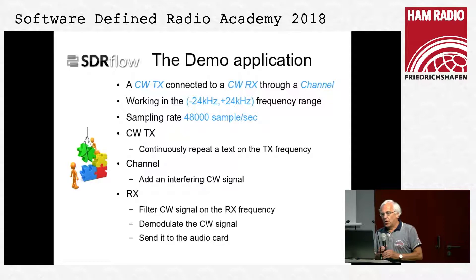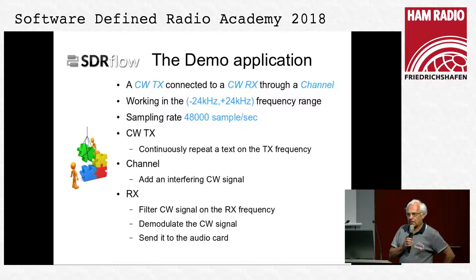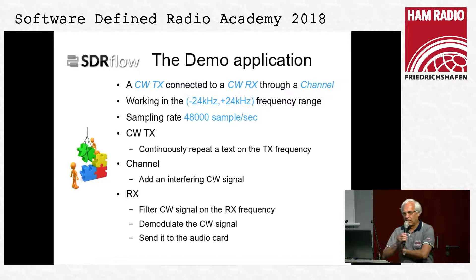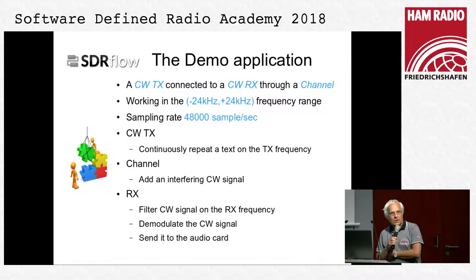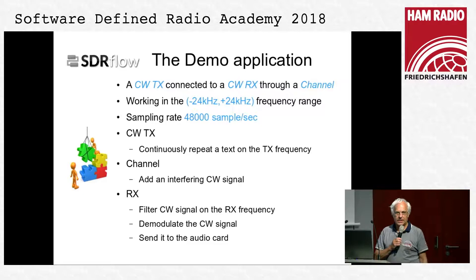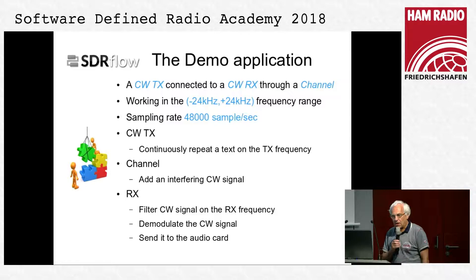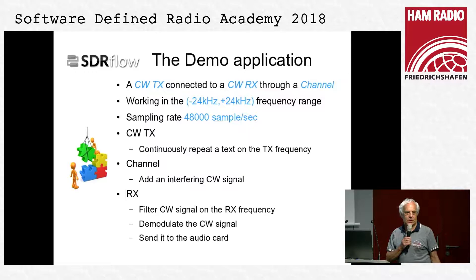Let's see the demo applications. It's very simple — it's a CW transmitter connected to a CW receiver through a channel. It works in the minus 24 to plus 24 kilohertz frequency range and uses a 48 kilohertz sample-per-second sample rate. The transmitter will repeatedly transmit a given text. The channel will add an interfering CW signal to the transmission. The receiver filters a small band from the spectrum, demodulates the CW signal in that band, and puts the demodulated signal to the sound card.